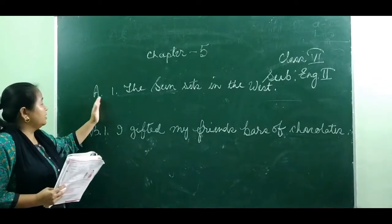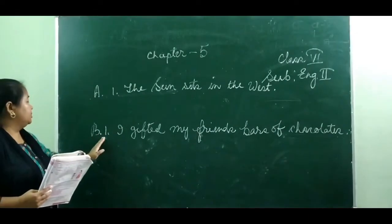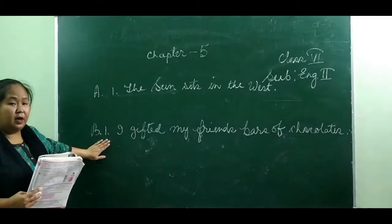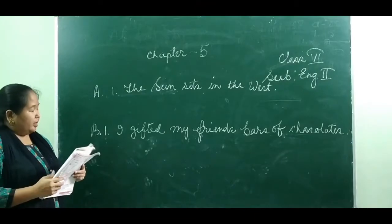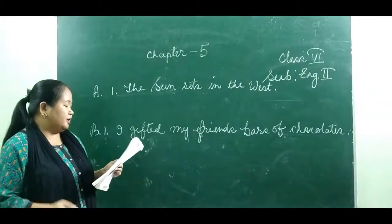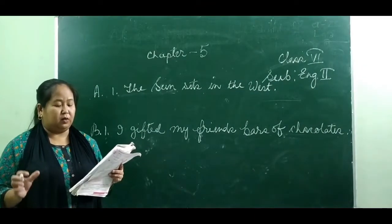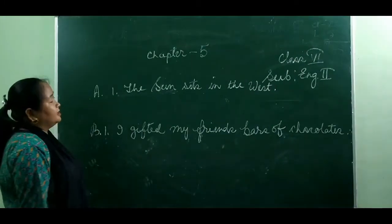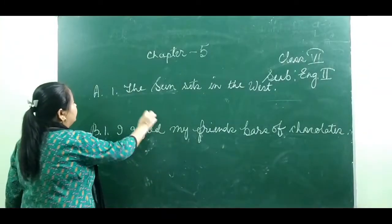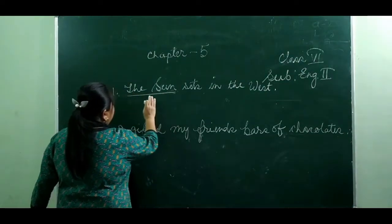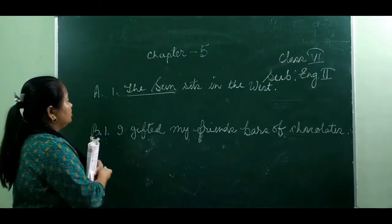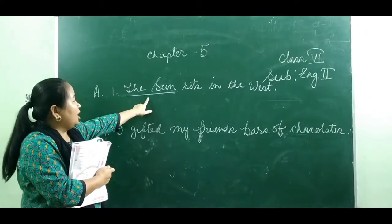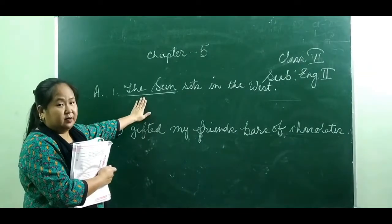Now let us do some exercises from your book. Exercise A, number 1: read the sentences given below and pick out the nouns in the nominative case. For example, 'The sun sets in the west.' Here, the noun is 'the sun.' This noun is used as a subject in this sentence, so this noun is in the nominative case.